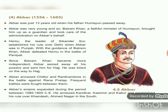Now we are going to learn about Akbar, who ruled from 1556 to 1605. Akbar was just 13 years old when his father Humayun passed away. Since he was very young, Bairam Khan — the faithful minister of Humayun — brought him up as a guardian and took care of administration on Akbar's behalf. Hemu, the leader of Sikandar Sur, established his rule over Delhi when Akbar was in Punjab. With the guidance of Bairam Khan, Akbar defeated Hemu in the Battle of Panipat. Since Bairam Khan became more independent, Akbar seized all his powers and sent him to Hajj, where he was killed on the way.